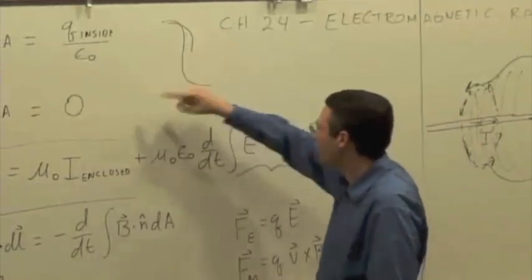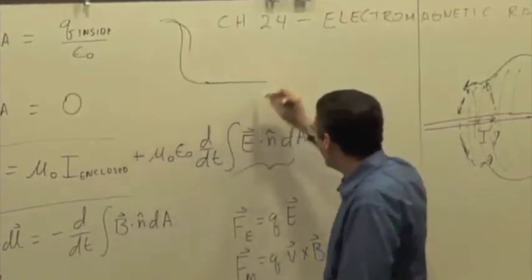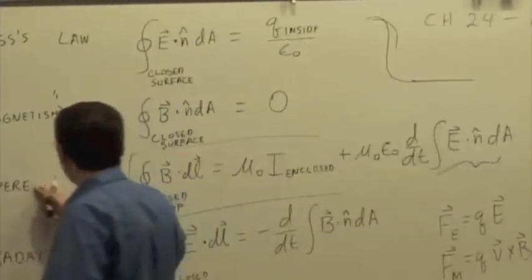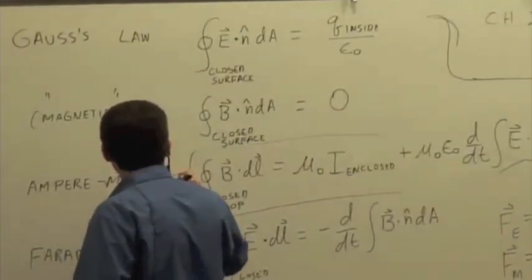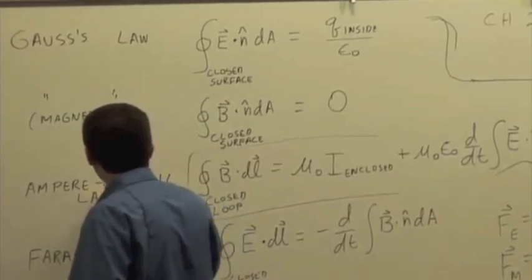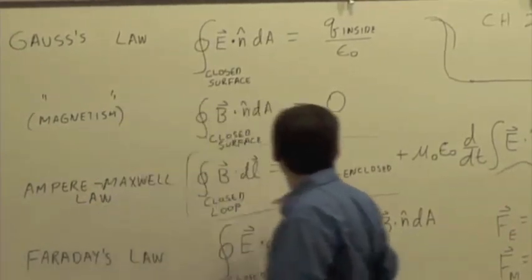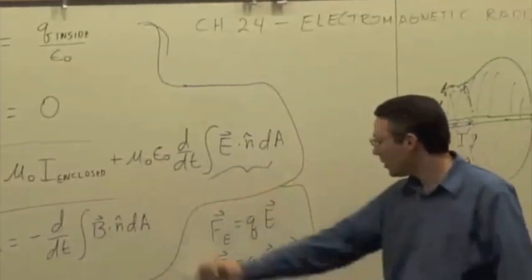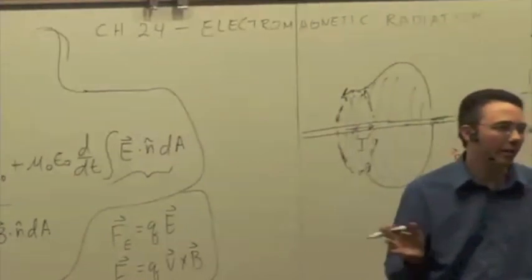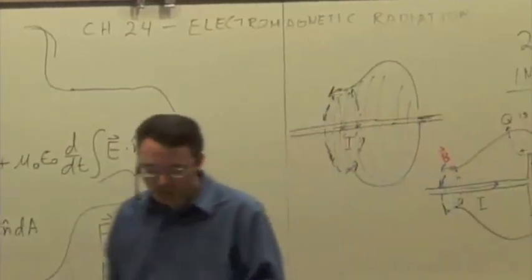So this is the complete form of Maxwell's equations. Gauss's law, Gauss's law for magnetism, sometimes this is called now the Ampere-Maxwell law because Maxwell added the correction, and Faraday's law. Those four plus the force laws sum up everything we need to know about electric magnetic fields.